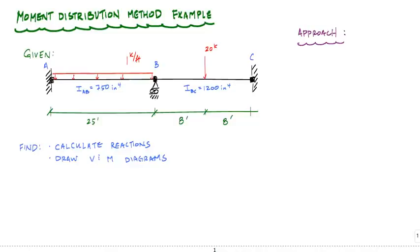If you've watched my previous video describing the process of the moment distribution method, you know I like to call it the lock and pop approach. The idea is that you lock all the joints, calculate fixed end moments, then you balance, distribute, carry over, and repeat that process of balancing, distributing, and carrying over.